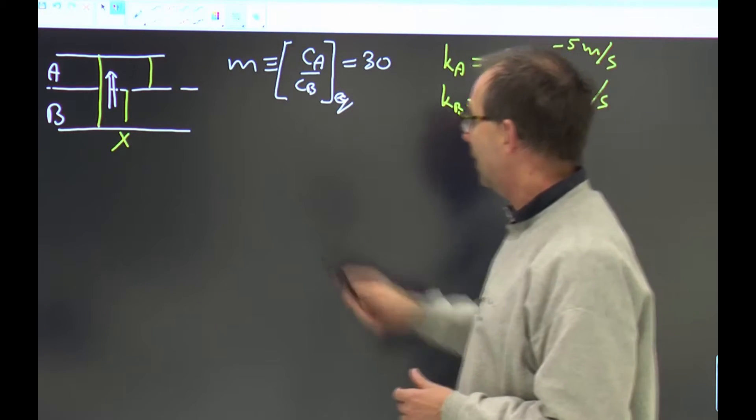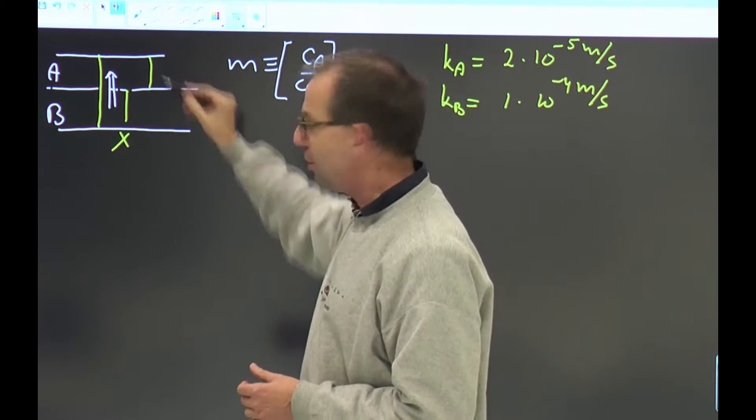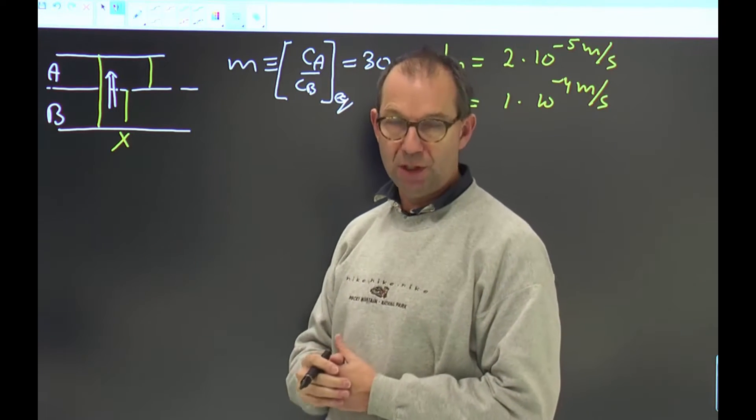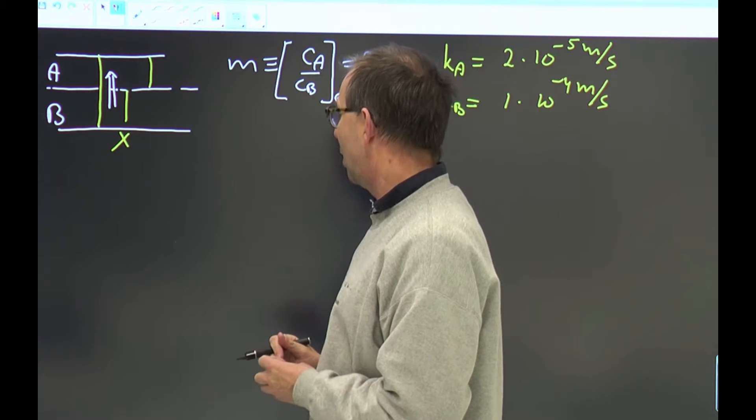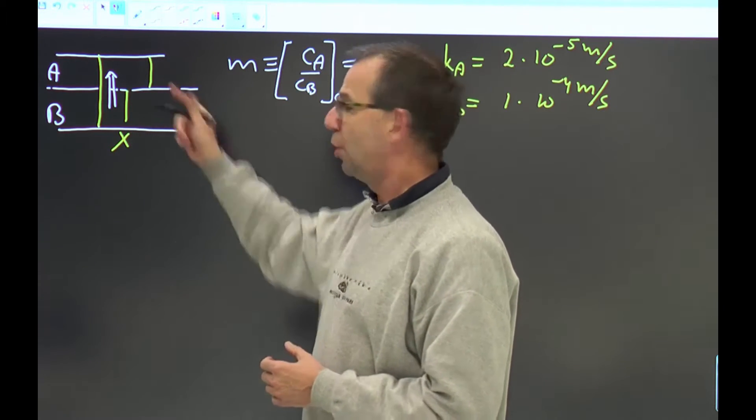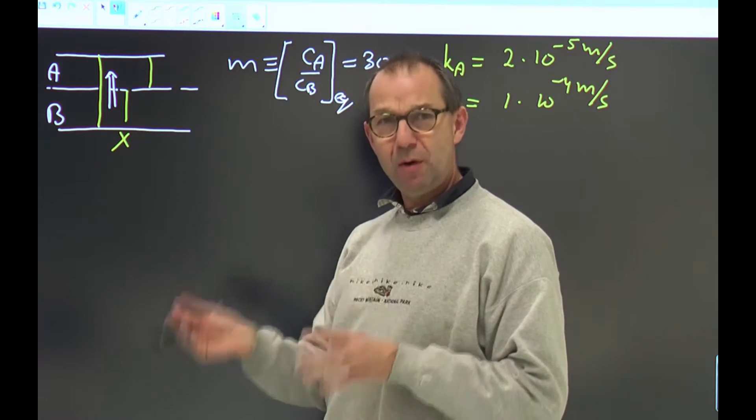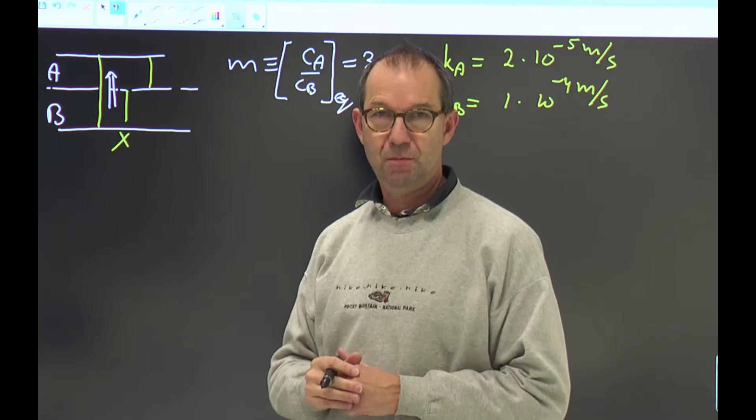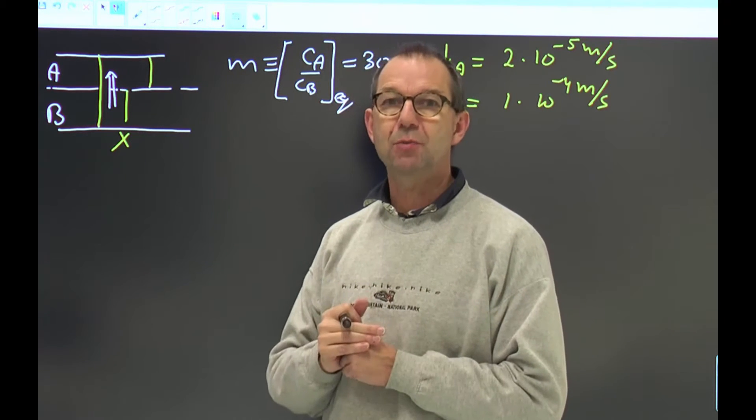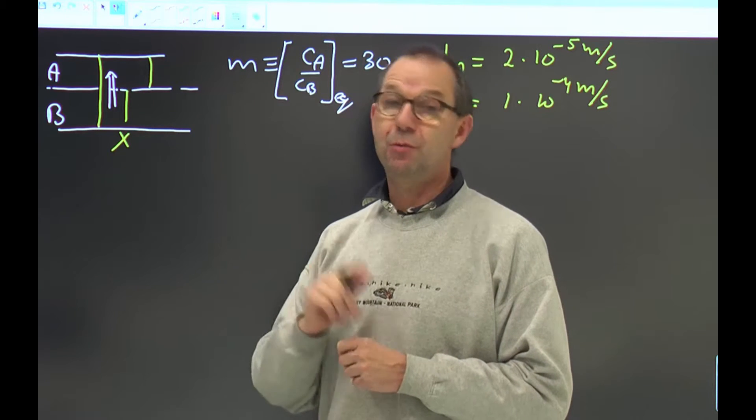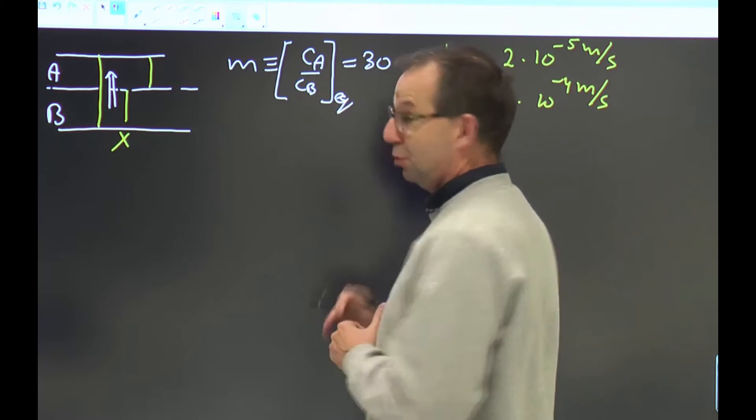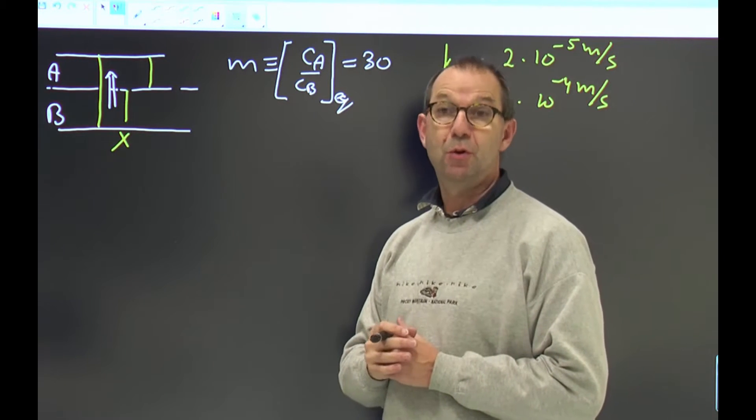So in order to understand how this initial concentration will shift over to the final concentration that we worked out in the earlier example, we're not going to solve the concentration but we're going to see whether we can make a prediction about one of the two by looking at the resistances. So the question we need to answer is: where is the resistance to mass transfer sitting, given M and given these two mass transfer coefficients?